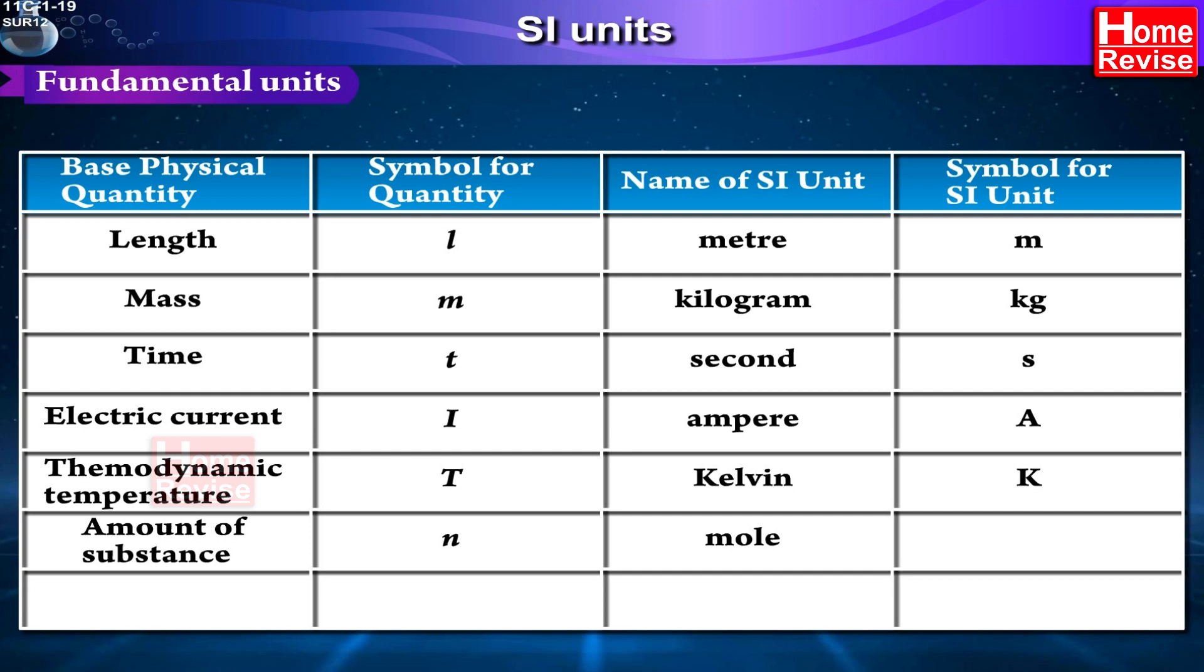Base physical quantity: Amount of substance, Symbol for quantity: N, Name of SI unit: Mol, Symbol for SI unit: Mol. Base physical quantity: Luminous intensity, Symbol for quantity: Iv, Name of SI unit: Candela, Symbol for SI unit: CD.